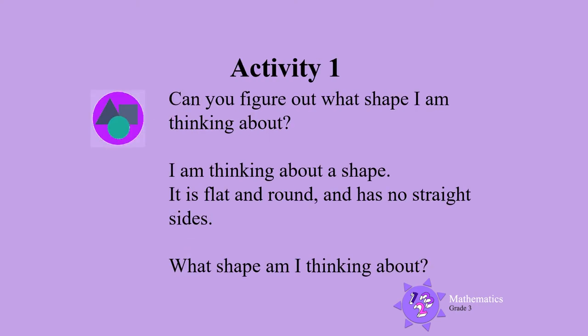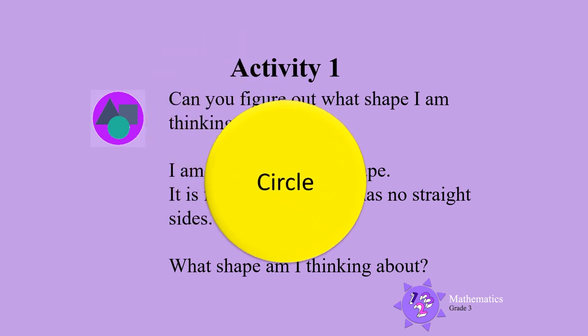Activity 1. Can you figure out what shape I am thinking about? I am thinking about a shape. It is flat and round and has no straight sides. What shape am I thinking about? Did you guess a circle? If so, that is correct.